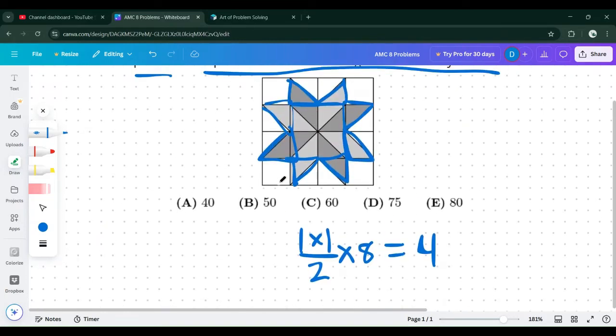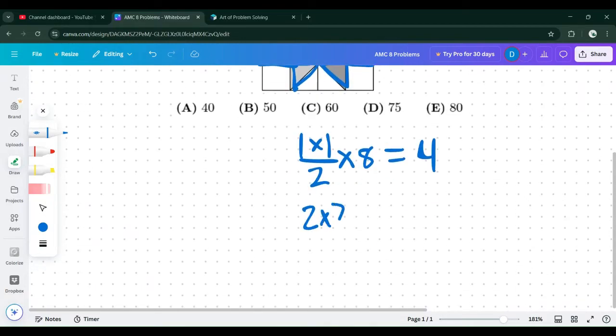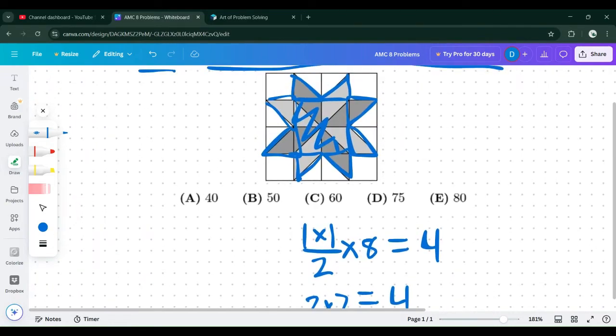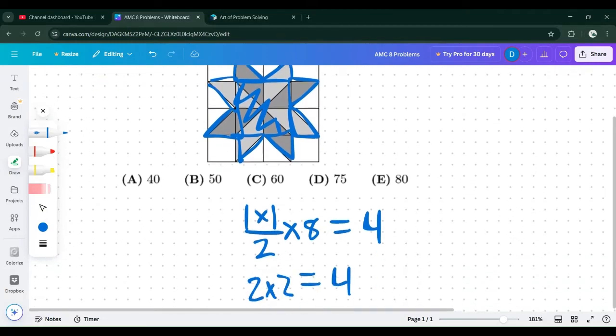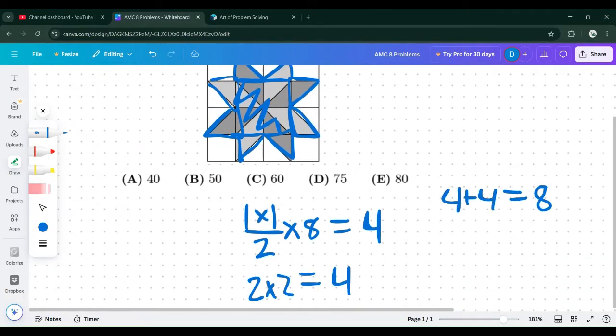So that is a total of four. For the square in the center, it's two by two and it also has an area of four. There's only one square, so four plus four is eight. That's the total area of the shaded region.